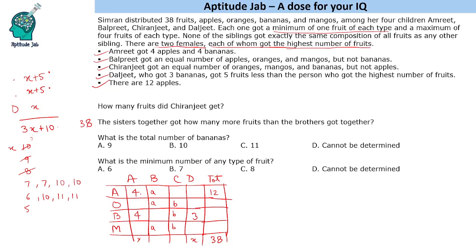So the valid cases are: Daljeet's total is 7 with the fourth person at 7 and the two highest at 12 each, or Daljeet's total is 6 with the fourth person at 10 and the two highest at 11 each. We will now make two cases and try to find out which is valid. Let us start with the case where Daljeet's total is 6.